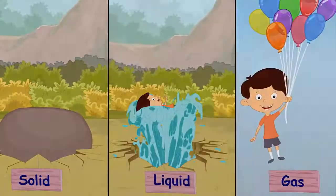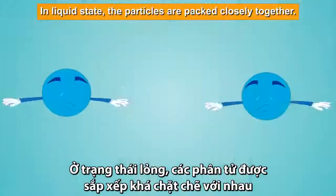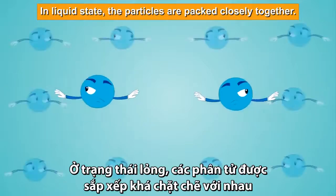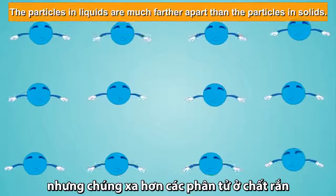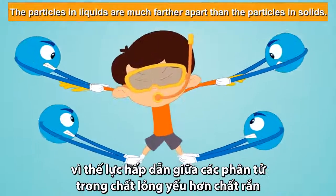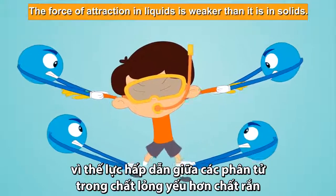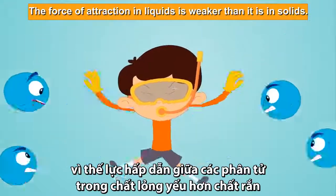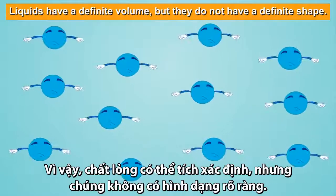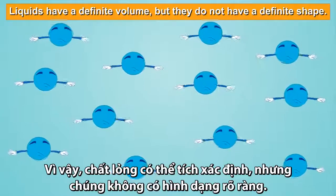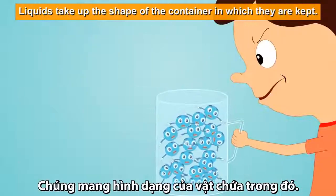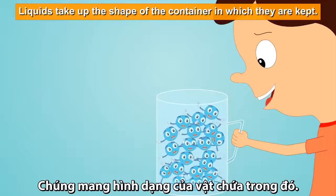In the liquid state, the particles are packed closely together, but they are much farther apart than the particles in solids. So the force of attraction is weaker than it is in solids. Therefore, liquids have a definite volume, but they do not have a definite shape — they take up the shape of the container in which they are kept.